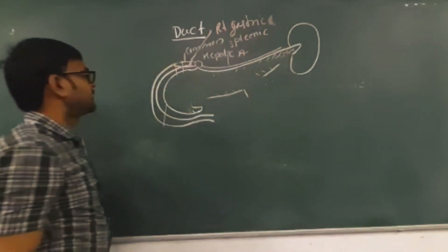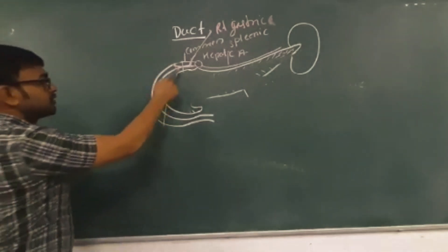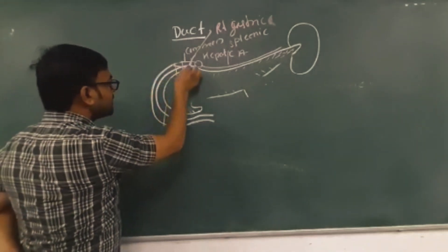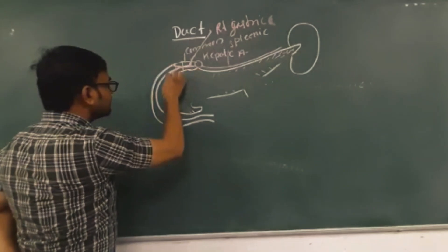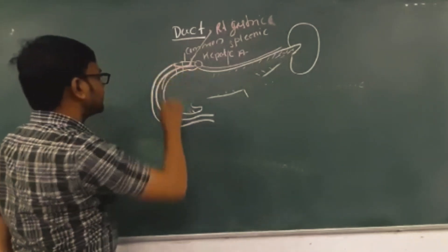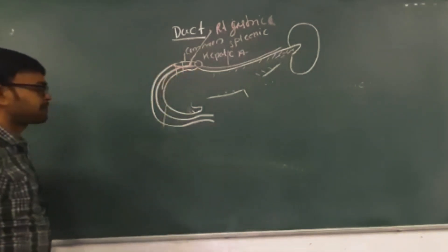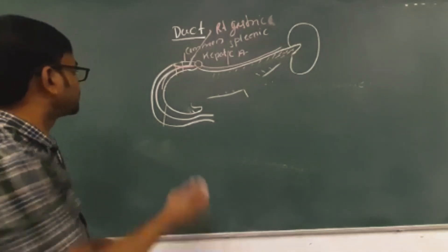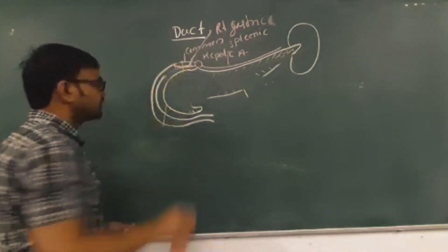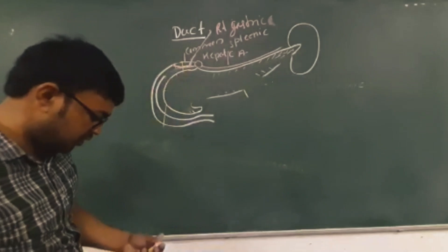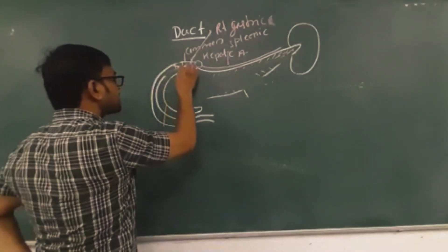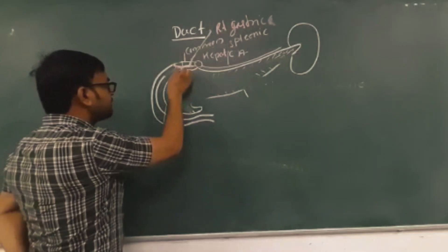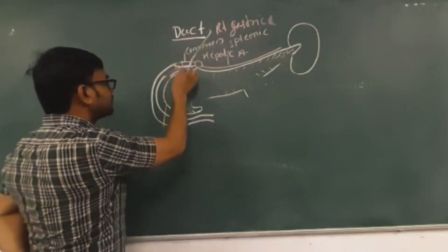The common hepatic artery gives the gastroduodenal artery. The gastroduodenal artery gives the superior pancreaticoduodenal artery.